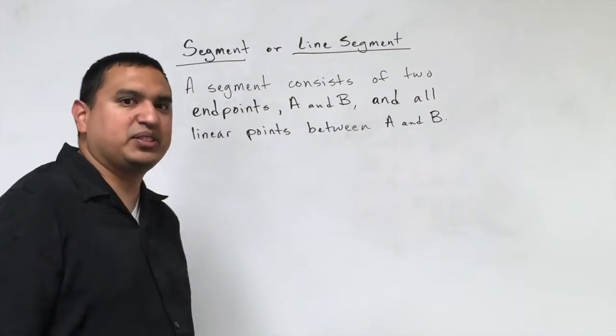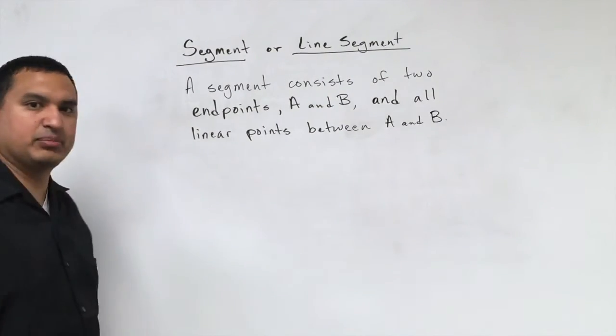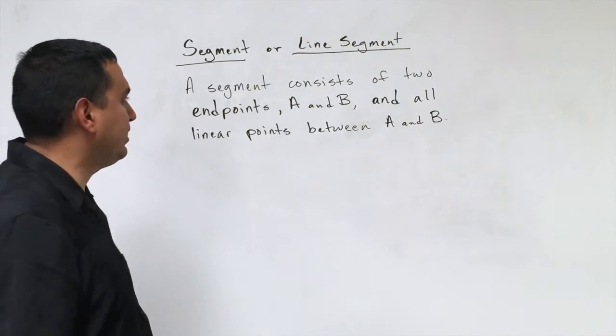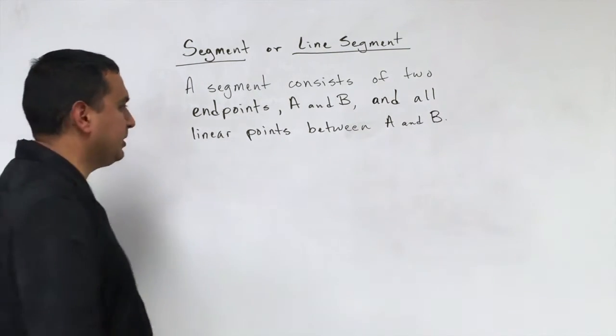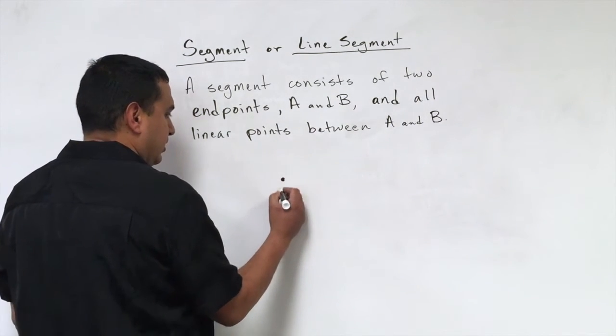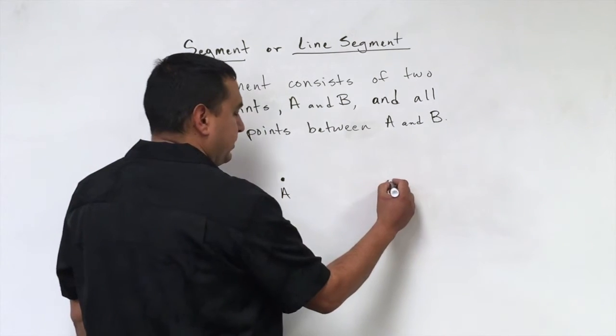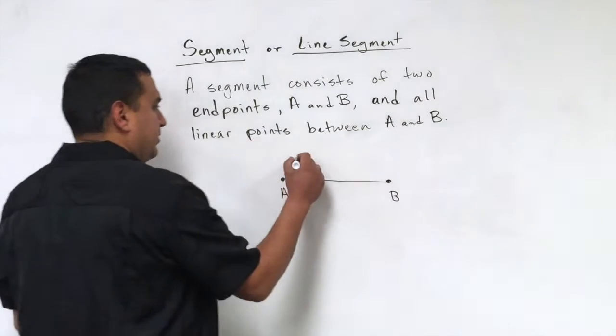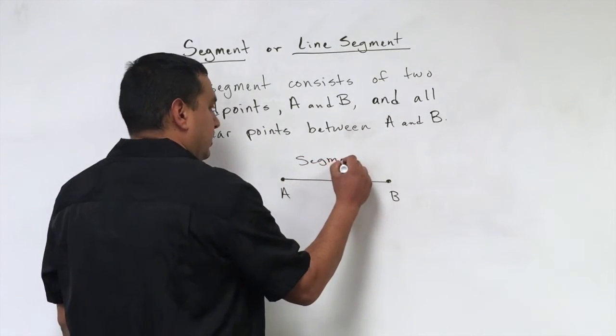The next definition we have is a segment, or you might say line segment, and a segment consists of two endpoints, A and B, and all the points between A and B. So a segment will look something like this. You'll have a point here, we'll call that A, and we'll have another point here. And if you connect them, all the points in between them, that gives you a segment.